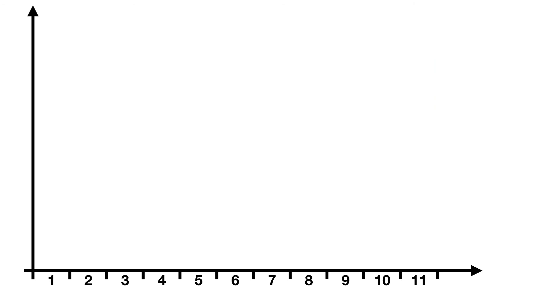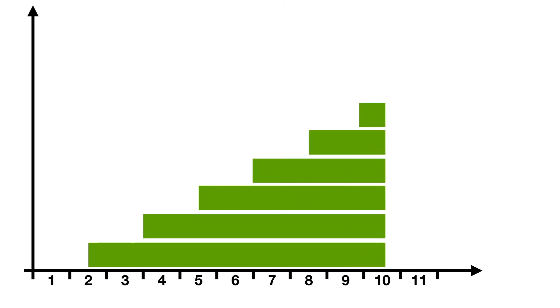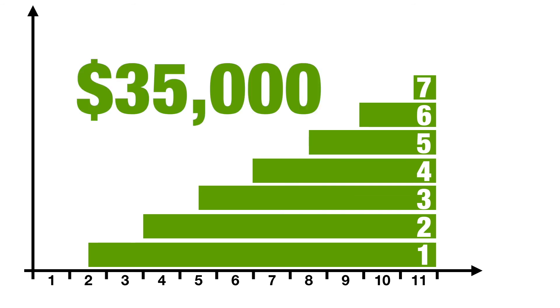What if you'd gone the other way, launching them one at a time? Well, in the same period, because you're taking longer to produce each course, you only produce 7 courses. However, the value of all 7 of those courses is stacking.